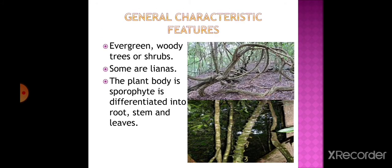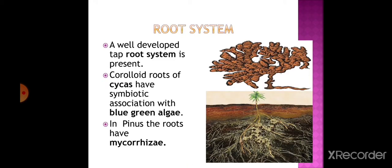Now let us discuss the general characteristic features of gymnosperms. Most gymnosperms are evergreen woody trees or shrubs; some are lianas, for example Gnetum. The plant body is a sporophyte and it is differentiated into root, stem and leaves. A sporophyte is a plant which produces spores by meiosis in order to produce the gametophyte.